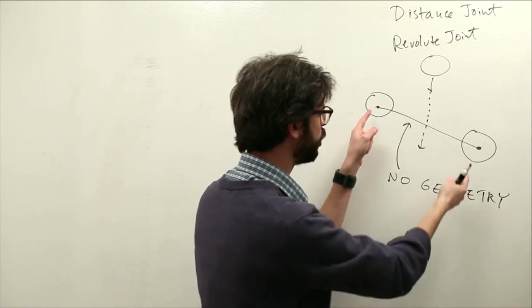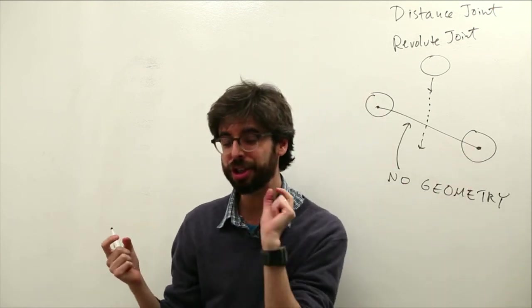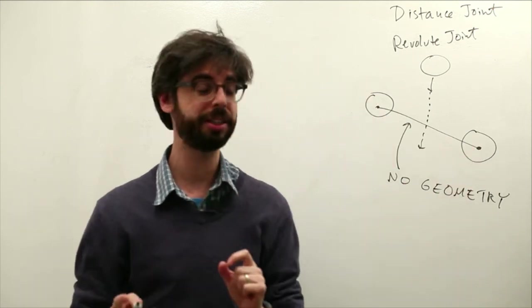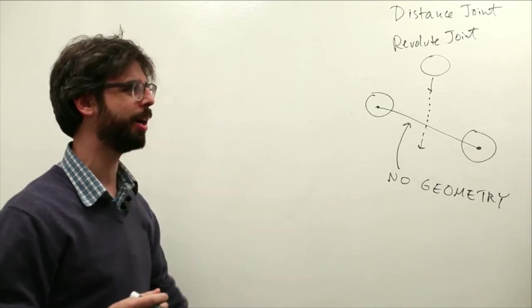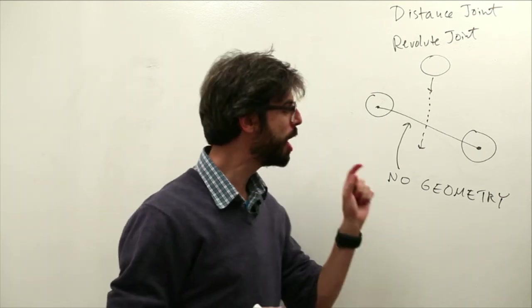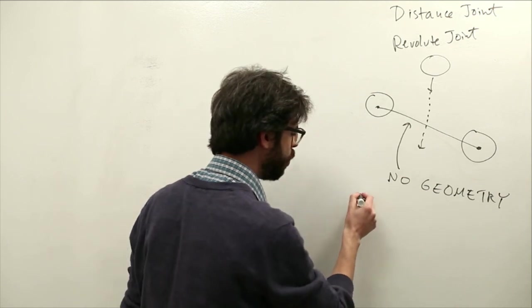Now in my example I'll choose to draw a line there but that shouldn't trick you to realize that there's no geometry. I'm kind of going ahead of myself here but if you wanted to actually have geometry.